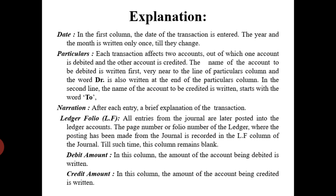The credited account starts with the word 'To'. For narration, after each entry you will write a brief explanation of the transaction. The narration helps to know in future the reason of the entry — why you recorded it, and other circumstances such as trade discount features. Ledger folio: all entries from the journal are later posted into the ledger account. This shows the page number — the ledger account number on which the entry will be posted.